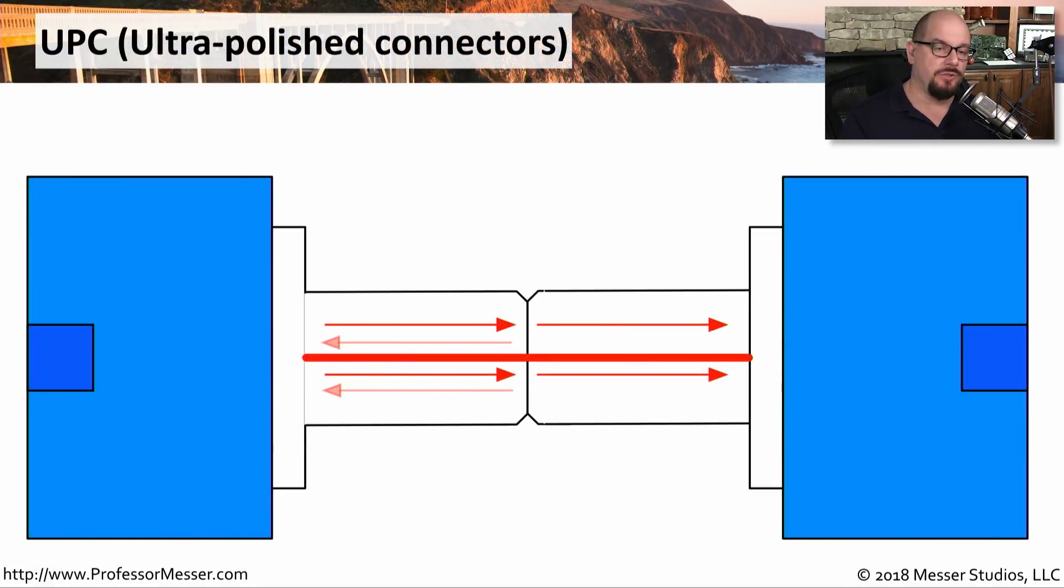Here's what two UPC connectors look like. If you were to push them onto each other, you can see there is a zero-degree angle difference between these two ends of that UPC. And you can see as we're sending signal down this connection, there will be reflections that come back from this zero-degree angle connector. This is very similar to taking a flashlight and shining it through a window. If you are directly in front of that window, some of that light will be reflected back to you and make it difficult for you to see.